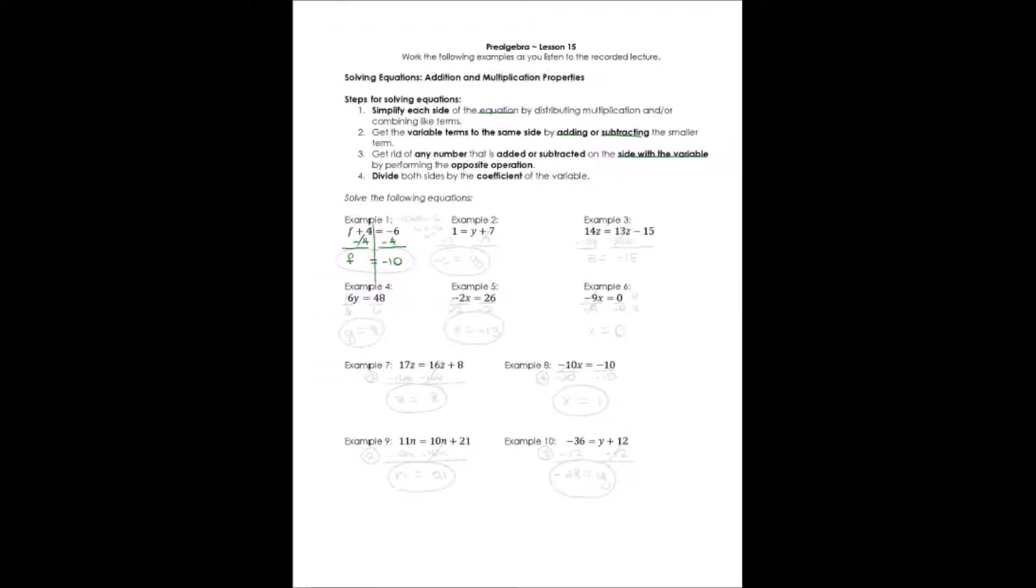Now, an equation is solved when the variable is all by itself on one side. It's a positive variable, and it's just one of them. It doesn't have a coefficient in front of it. So f equals negative ten is the answer. If I wanted to check it, I would go back into my problem, and everywhere I had an f, I would plug in negative ten. In this problem, it would say negative ten plus four equals negative six. The negative ten plus four, of course, does equal negative six. So we know we found the right answer.